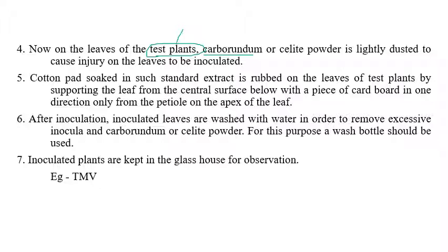After grinding using sterilized pestle and mortar, a liquid material is obtained. This liquid material can be stored at minus four degrees centigrade. Test plants (healthy plants) are taken, carborundum powder is used to make wounds, and cotton soaked in the liquid extract is rubbed onto the injured leaves of the test plants. The plants are then kept in greenhouse conditions, and after 5 to 10 days, tobacco mosaic virus symptoms can be observed on the healthy plants.